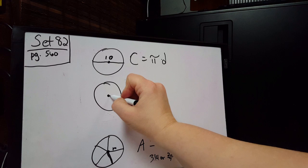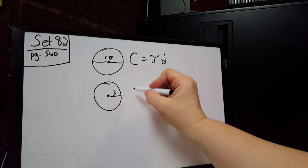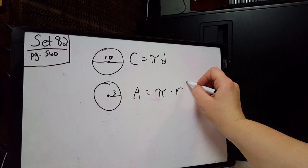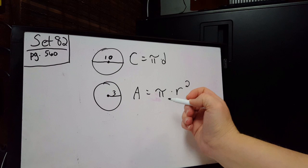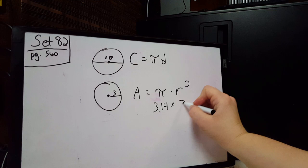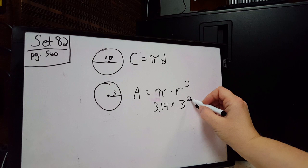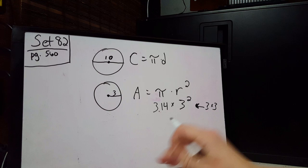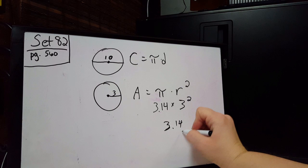Let's say our radius is 3. To find the area it would be pi times the radius squared. Since the problem doesn't specify, we use the decimal, so that's 3.14 times the radius squared. The radius is 3, so we have 3.14 times 3 squared. Now, 3 squared means 3 times 3 — not 3 times 2. The exponent means the number times itself, so 3 times 3 equals 9.